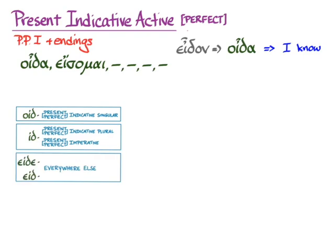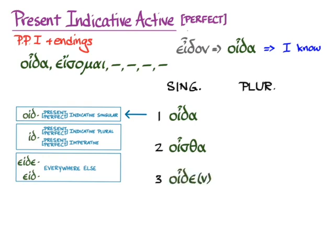So let's start with the present indicative active. We'll use the stem oid for the singular, and we'll get oida. Now, in the second person singular, that delta switches to a sigma before the ending, and we get oista, and then oiden, which has a nu movable.